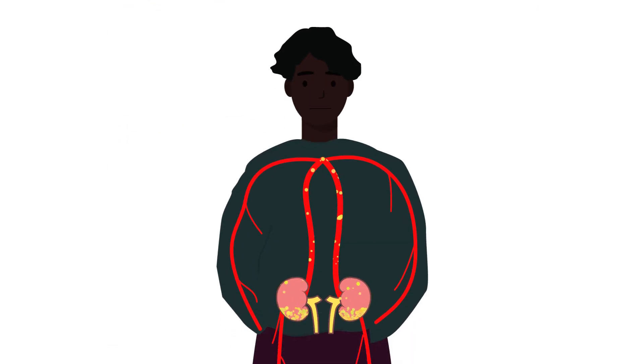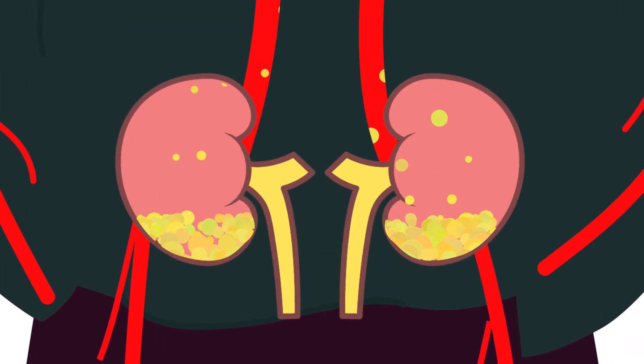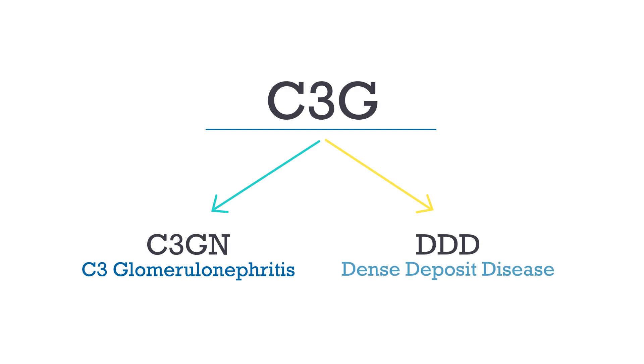Both damage the kidneys, lowering their ability to filter waste and fluid from your blood. There are actually two different types of C3G: C3GN, which stands for C3 Glomerulonephritis, and DDD, which stands for Dense Deposit Disease.